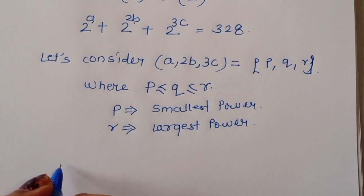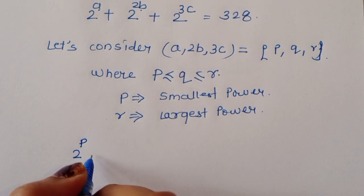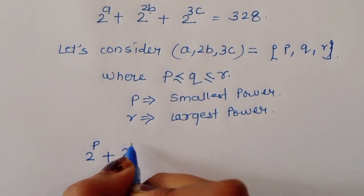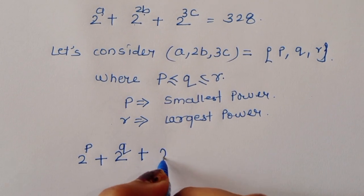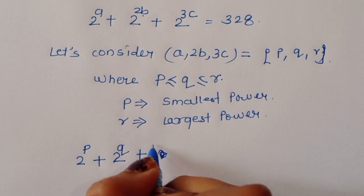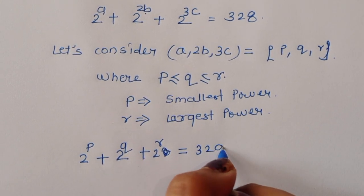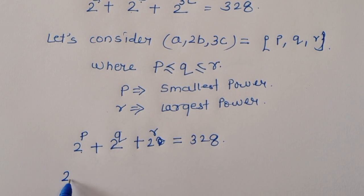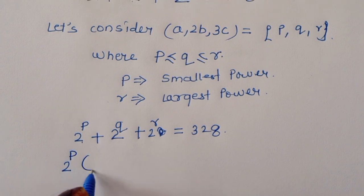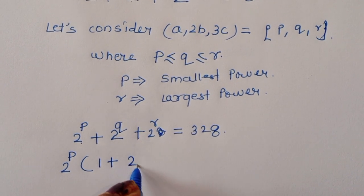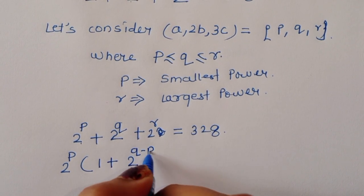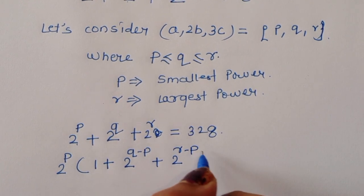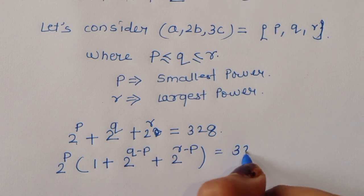So we can write 2 power P plus 2 power Q plus 2 power R is equal to 328. Taking 2 power P common, we get 2 power P times (1 plus 2 power Q minus P plus 2 power R minus P) is equal to 328.